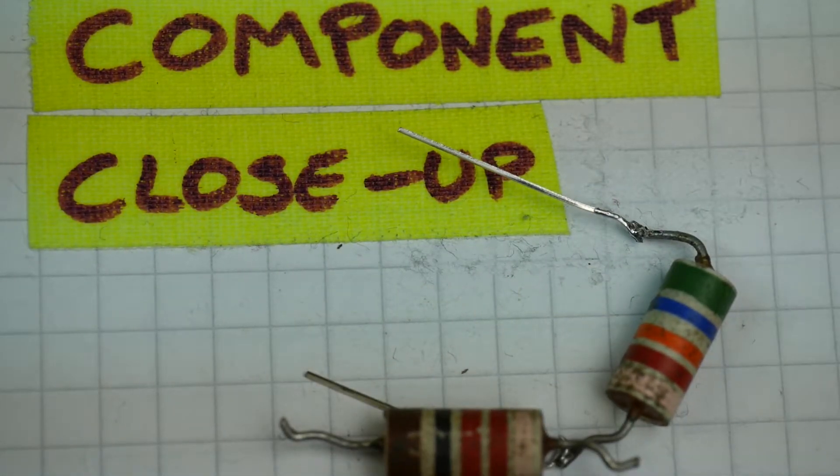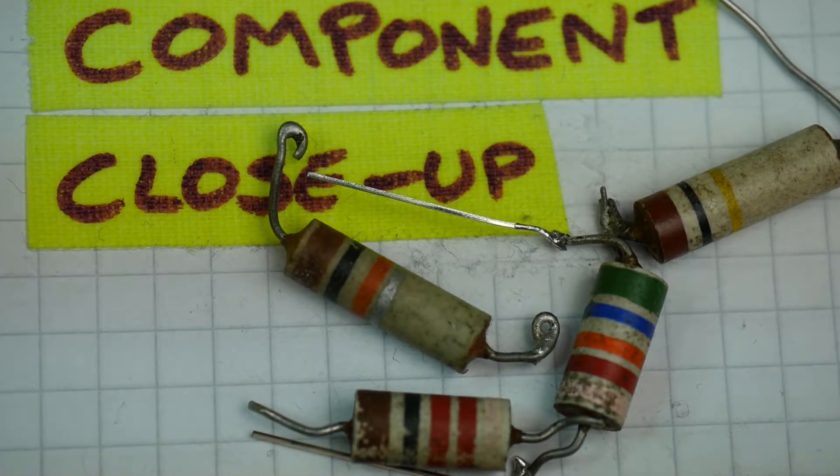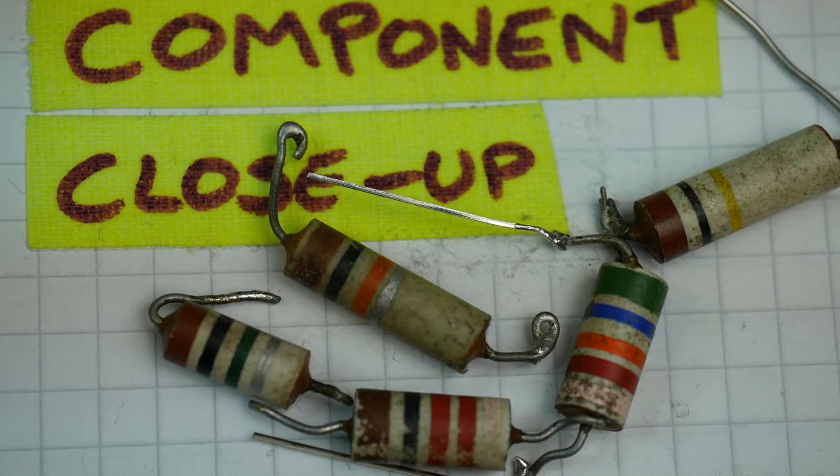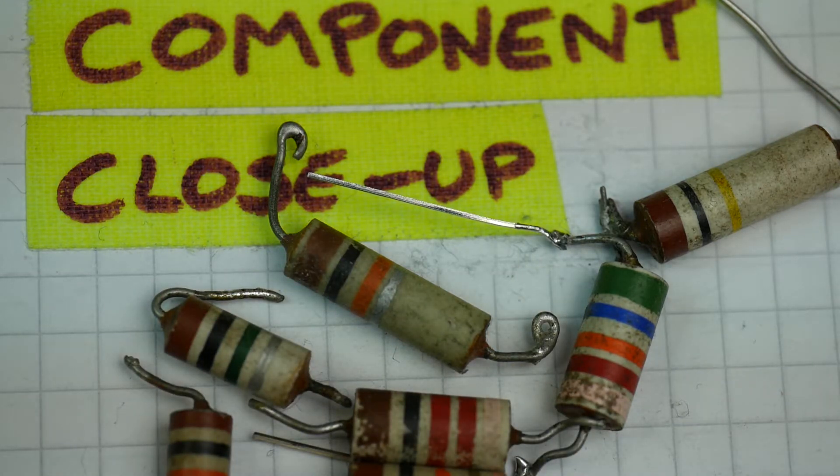So there we have it. That's the humble carbon composition resistor from the 1960s. Something that, as I say, we don't really see anymore, unless we're messing about with retro circuits, valve radios, old, very early transistor circuits. You might find resistors like this. But generally the carbon resistor isn't made anymore.